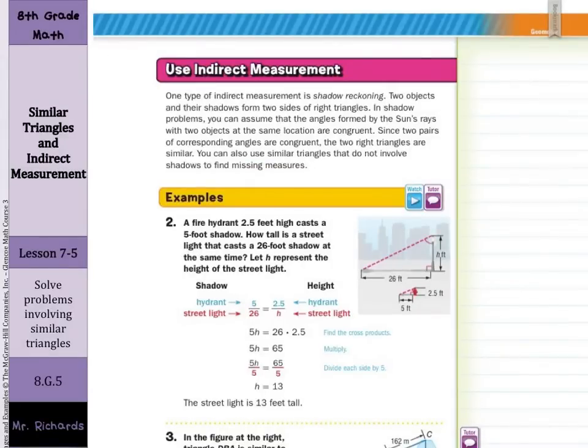In the second part of our lesson, we get to use indirect measurement. One type of indirect measurement is shadow reckoning. Two objects and their shadows form two sides of right triangles. In shadow problems, you can assume that the angles formed by the sun's rays with two objects at the same location are congruent.